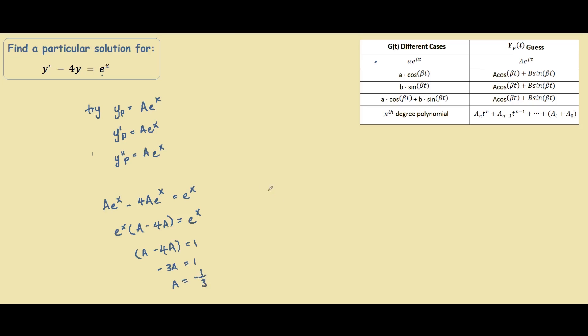Our last step is to substitute this back into our y particular, so y particular equals negative 1 third times e to the power of x.